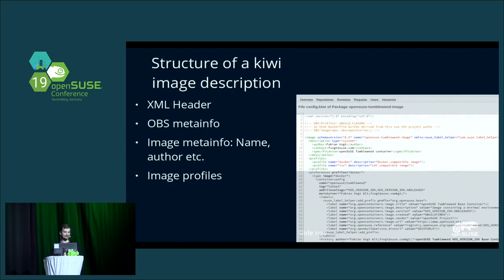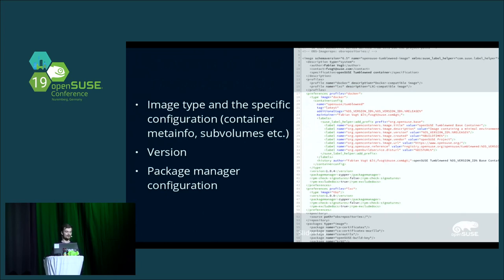A Kiwi image description is a fairly complex XML file, and you probably can't read any of that text, but don't worry. The top part of the Kiwi file contains an XML header and then some magic comments which tell OBS things it doesn't know otherwise — like Kiwi profiles or, for Docker containers, which repositories to use. Below there, the image metadata is defined: the name of the image file name, the author of the image, and also profiles, which I'll get into in more detail later if I have enough time.